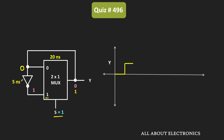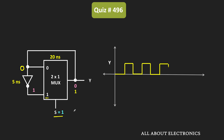That 25 nanoseconds is the combined propagation delay of the inverter plus the multiplexer. Once Y becomes 1, the same 1 feeds back through the inverter, becoming 0 after 5 nanoseconds, and then after the multiplexer's 20 nanosecond delay, the same 0 appears at the output. So once again, after a total propagation delay of 25 nanoseconds, the output returns to 0. This sequence then repeats — every 25 nanoseconds the output toggles.